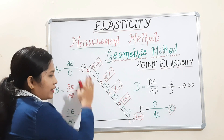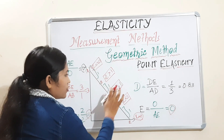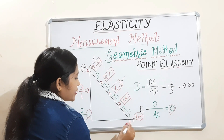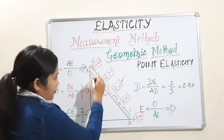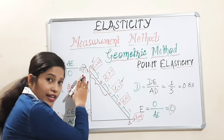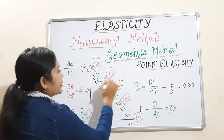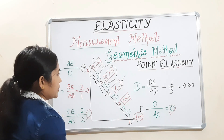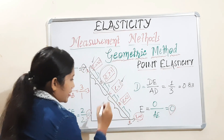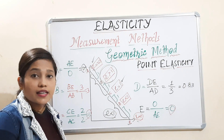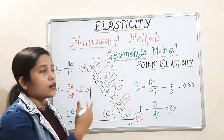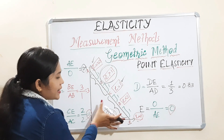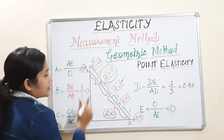Remember: between point A and C, any point you take, the value will be relatively elastic — because the lower segment is higher than the upper segment. Similarly, any point between C and E will have a value less than 1, meaning relatively inelastic — because the lower segment will be less than the upper segment. You can calculate yourself and easily verify this in every case.